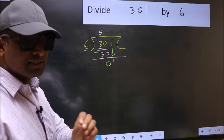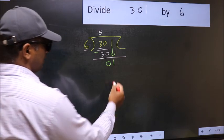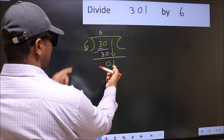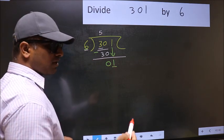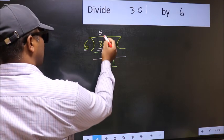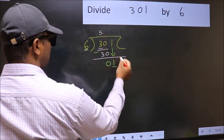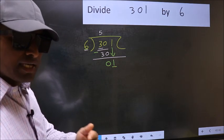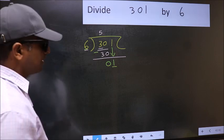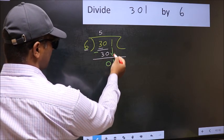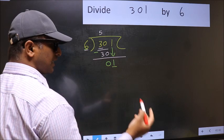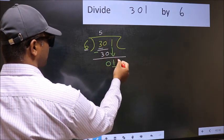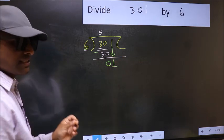And the mistake is this. Here we have 1 and here 6. 1 is smaller than 6. So what many do is they directly put dot and take 0, which is wrong. Why is it wrong? Because just now you brought this number down. And in the same step, you want to put dot and take 0, which is wrong.